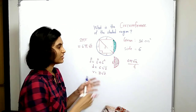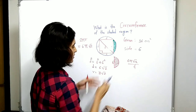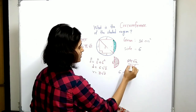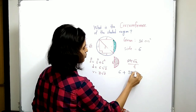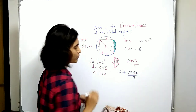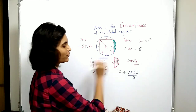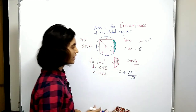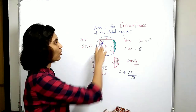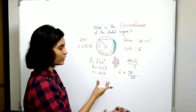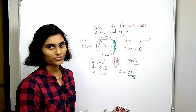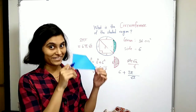Adding the two parts: 6 plus 6π√2/4 simplifies to 3π√2/2, which can be further simplified to 3π/√2. So the circumference of this shaded region is equal to 6 + 3π/√2. I hope you have understood this problem.